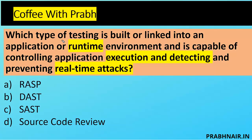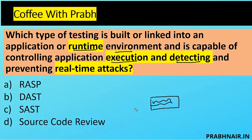Which type of testing is built or linked into an application or runtime environment and is capable of controlling application execution and detecting and preventing real-time attacks? We have three types of testing here: RASP, DAST, SAST, and source code review. In source code review, we have access to the source code and we review the code to identify bugs.